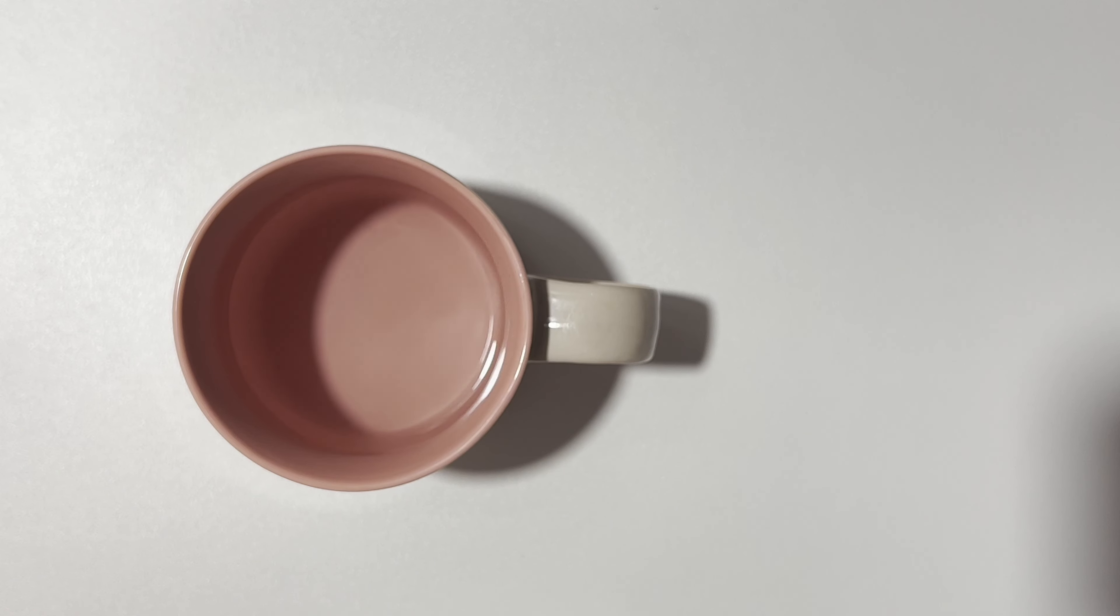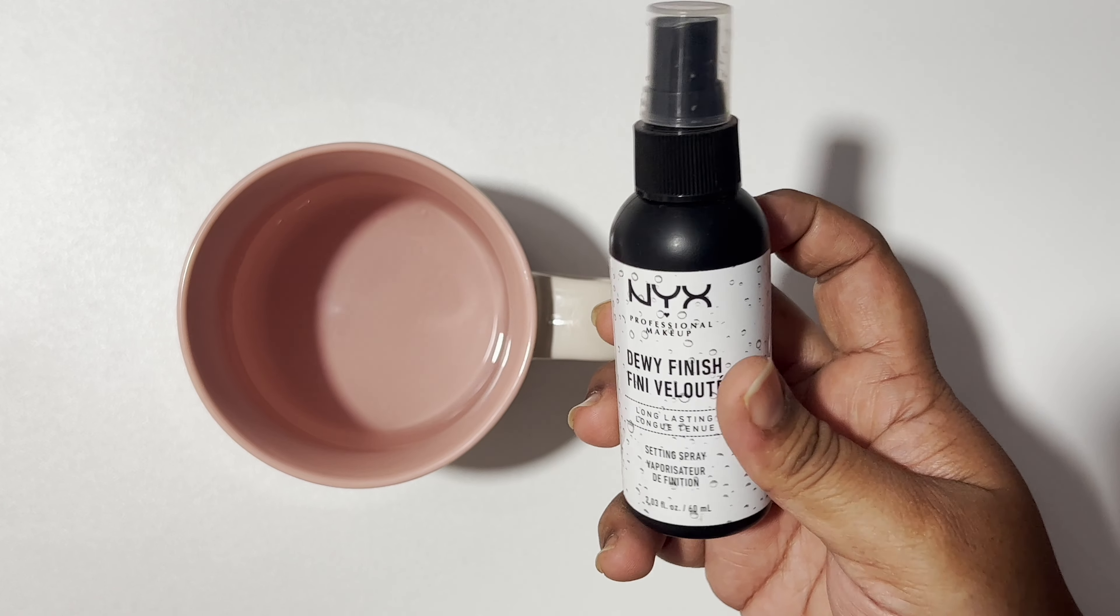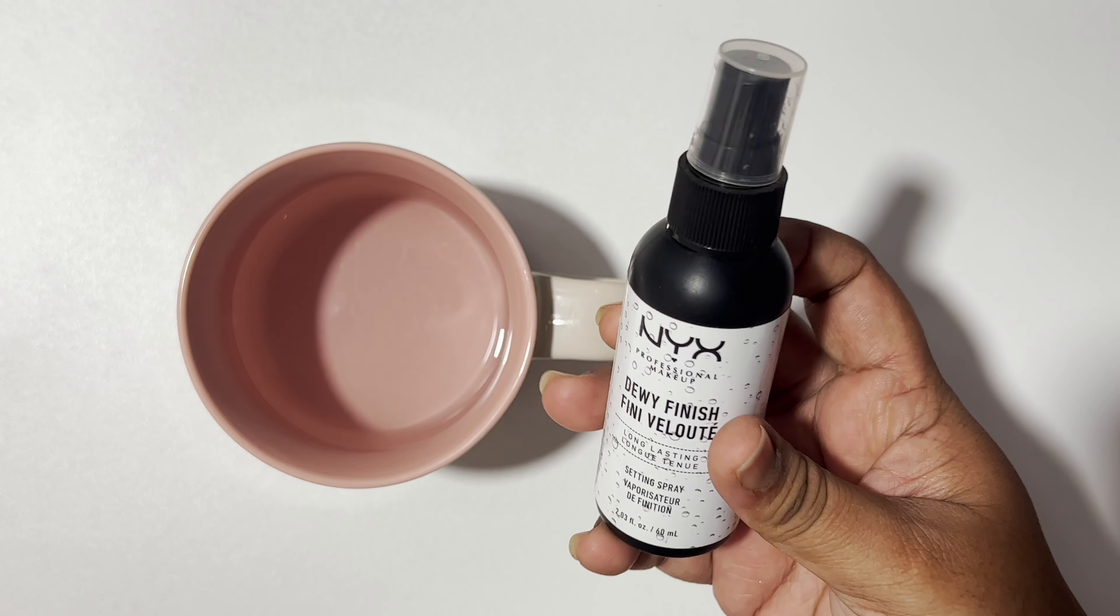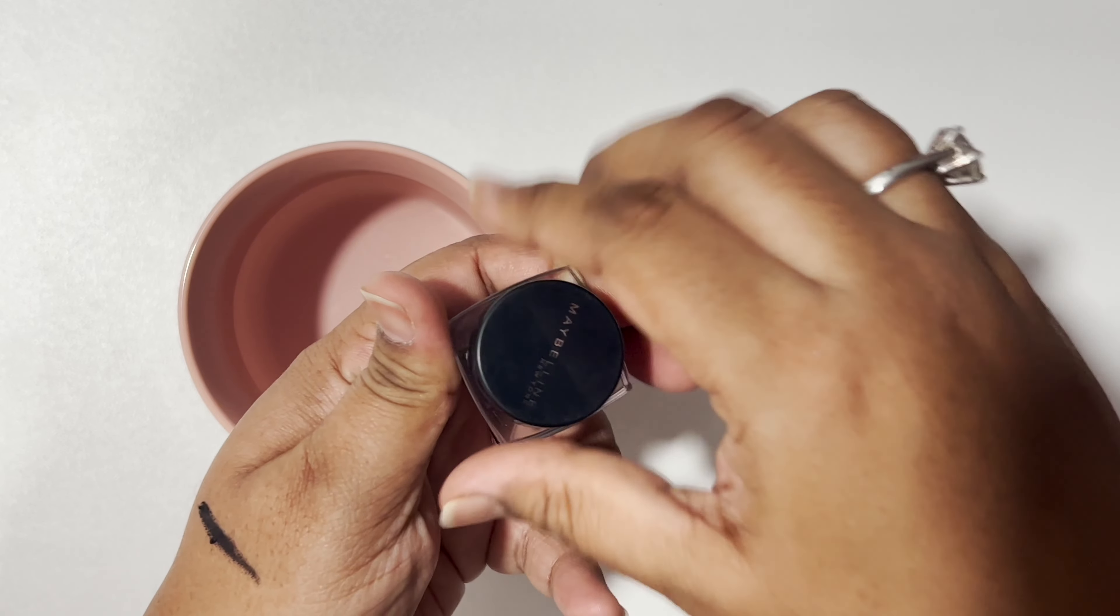To make this eyeliner work once again, I'm going to take only two things. One is a makeup setting spray from any brand—I'm using NYX Professional Setting Spray. The second thing I'll need is some really hot water.